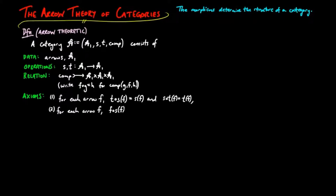For each arrow F, F precomposed by the source of F is equal to F, and the target of F precomposed by F is equal to F.